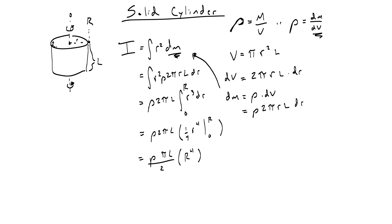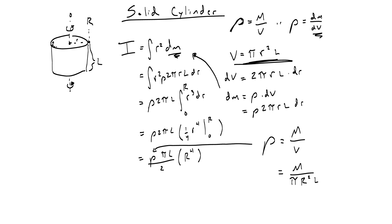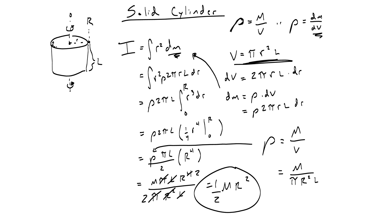The last step is to replace rho — mass over total volume — with a definite equation. We keep total mass M and replace V with our cylinder volume formula using capital R: pi capital R squared times l. Plugging this in gives M pi l R to the fourth over 2 pi R squared l. Pi cancels, l cancels, and R squared cancels part of R to the fourth, leaving one-half M R squared. That's the moment of inertia for a solid cylinder.